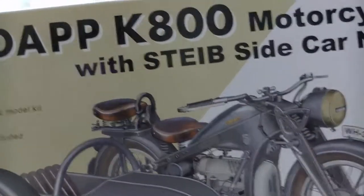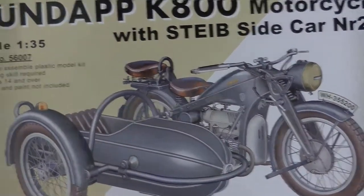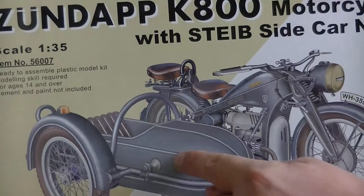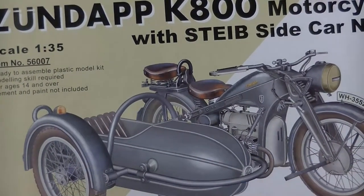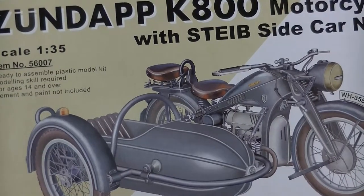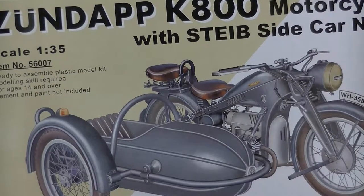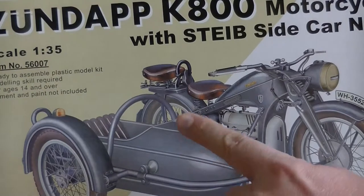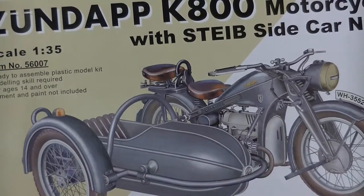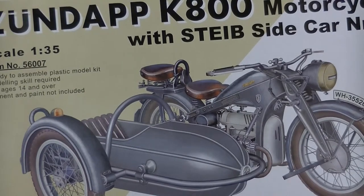For the side, we got the box art. We got this Steib sidecar, which is quite unusual since this was mainly a civilian sidecar. Actually, those are still built because Steib is still existing as a company in Germany. So nowadays even people with classic motorbikes who want to add a new sidecar are still buying those ones.